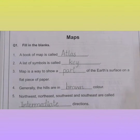Now firstly we will do question number 1, fill in the blanks. Number 1: a book of maps is called — atlas. Number 2: a list of symbols is called — key. Number 3: a map is a way to show a dash of the earth's surface on a flat piece of paper — part.